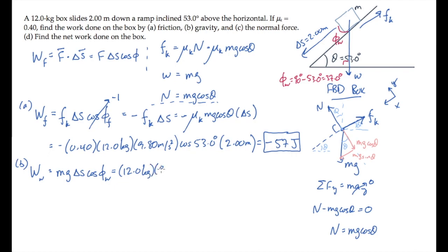When we substitute numbers now and calculate, we find that the work done by weight is 188 joules. It's positive because the weight is down and the block is sliding down the ramp.